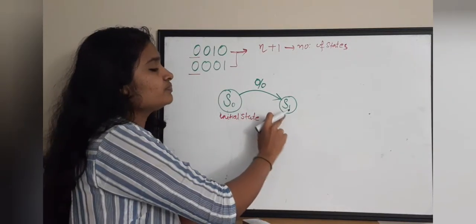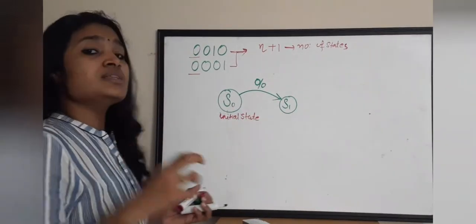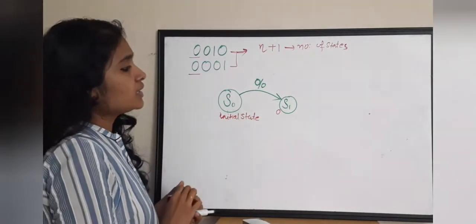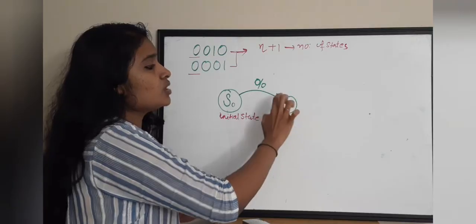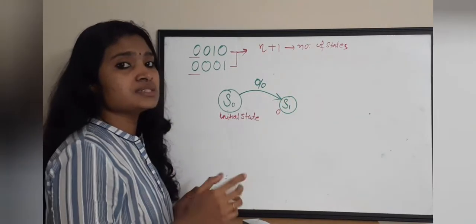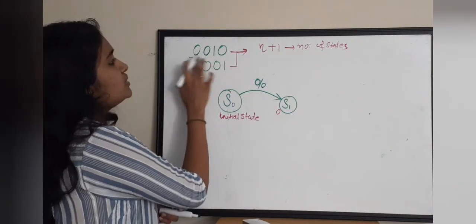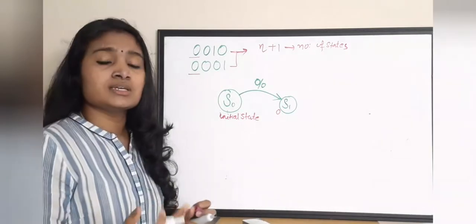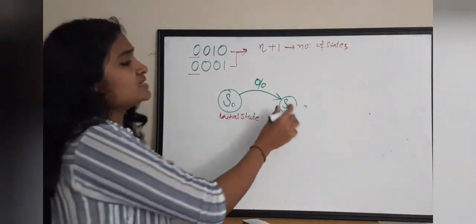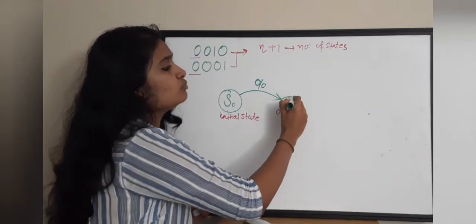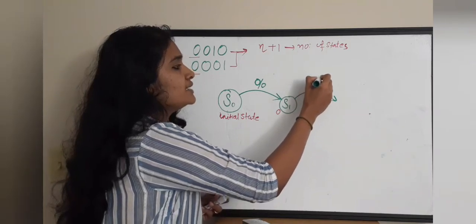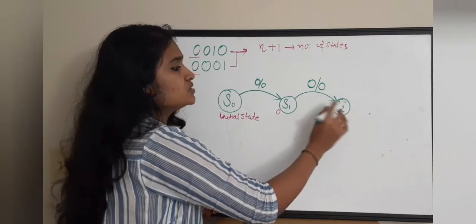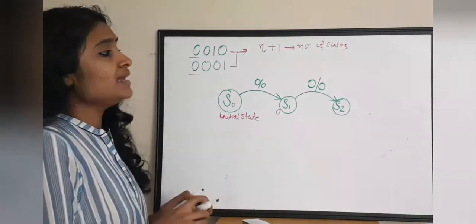In S1 state, the sequence held so far is a single 0. In S1, when you receive another 0, you have progress in both sequences since both start with 0 0. So receiving a 0 in S1 gives output 0 and you move forward to S2.